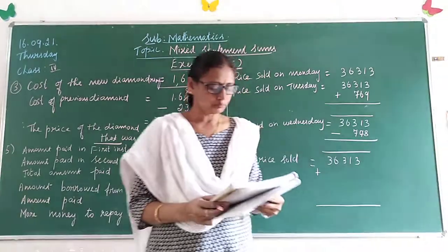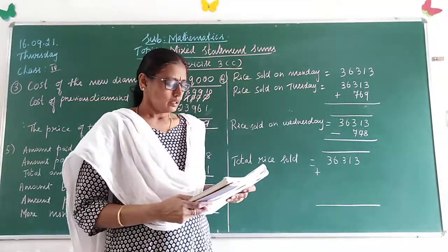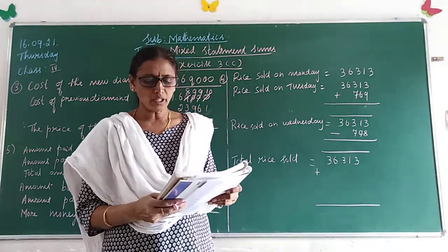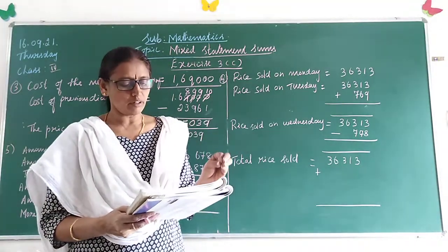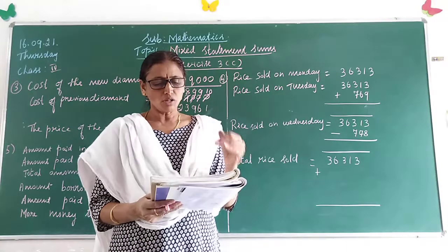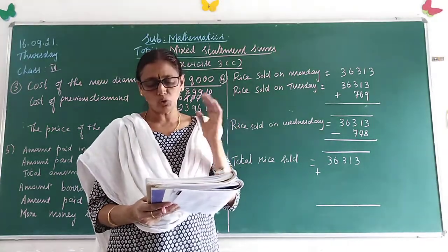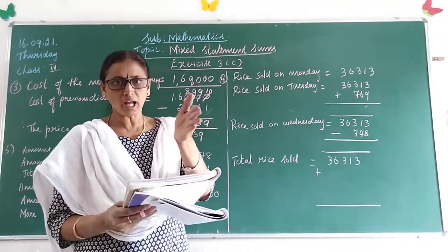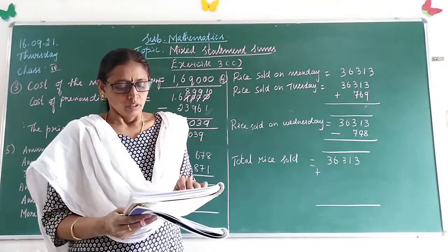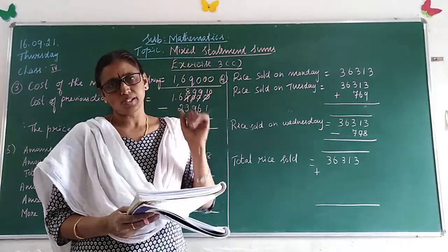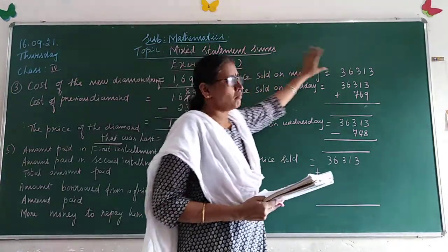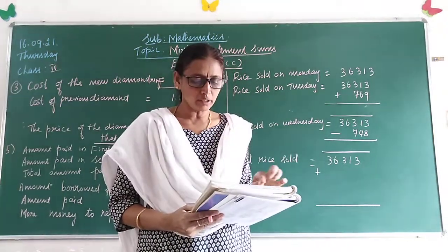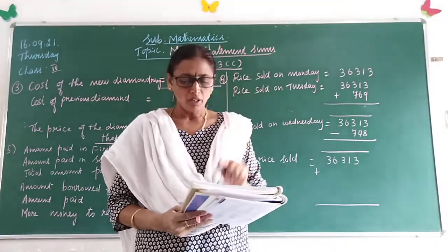Now let's go to the next question. A shopkeeper sold 36,313 kg of rice on Monday. On Tuesday he sold 769 kg of rice more than on Monday. On Wednesday he sold 778 kg of rice less than on Monday. We know the rice sold on Monday. We need to find rice sold on Tuesday and rice sold on Wednesday.